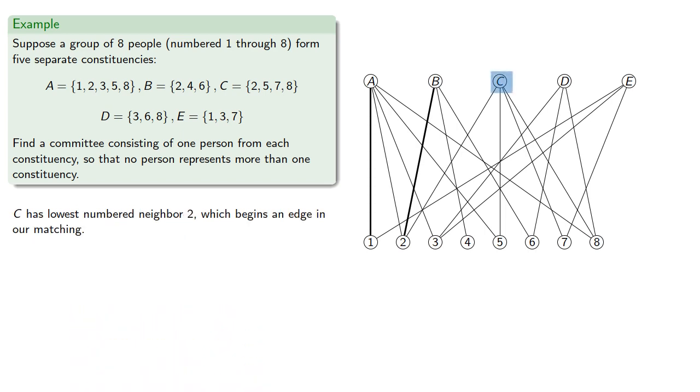C has lowest-numbered neighbor, 2, which begins an edge in our matching. So, we'll follow that edge to B, and then from B, the lowest-numbered edge not yet included is 4. So, we find C2, 2B, B4 is a M-augmented path. So, we switch out B2 for C2 and B4.